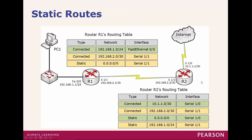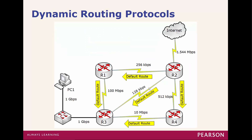We can actually have static routes so that R1 knows about a remote network if we manually put it in. We can also tell it to forward everything out a specific interface using 0.0.0.0, meaning everything will be sent out that interface. On R2, we can have everything forward back to the internet as well as anything designated for a specific network sent back to R1. Versus dynamic routing protocols, we could set each router to learn about one another and share information, which is done via routing protocols.